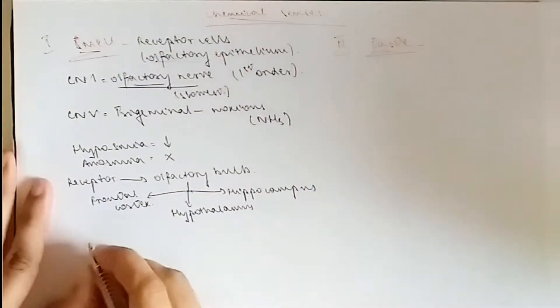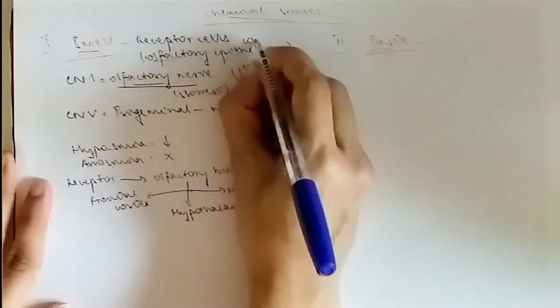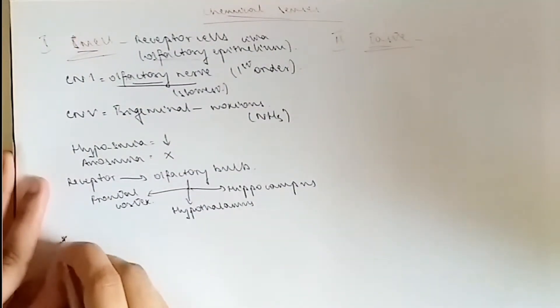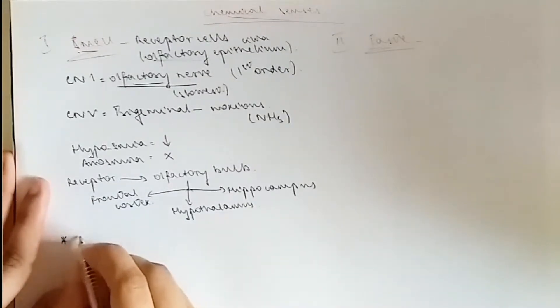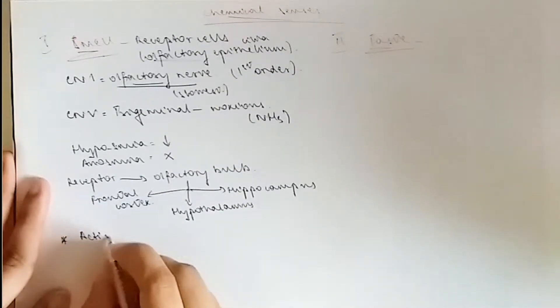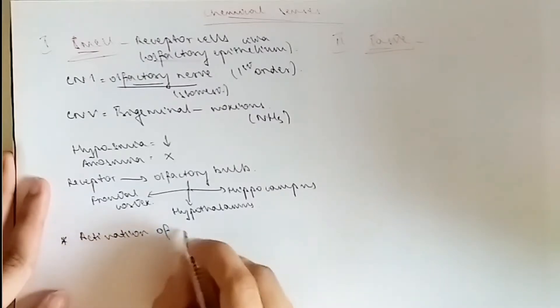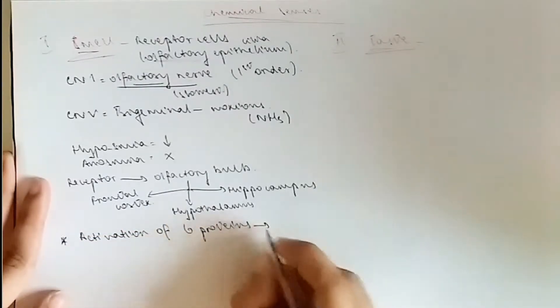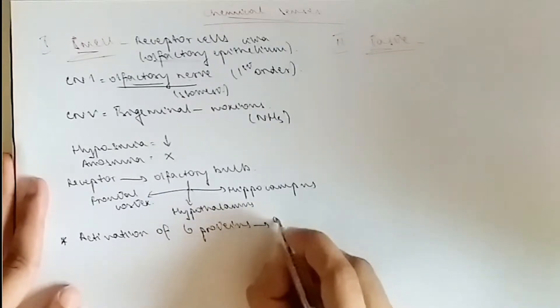The epithelium is olfactory and it's got cilia which detects it. Going to the physiology part of the smell, we know that there has to be a mechanism. There's depolarization, which is opening up the sodium channels, and this happens for activation of the G proteins.